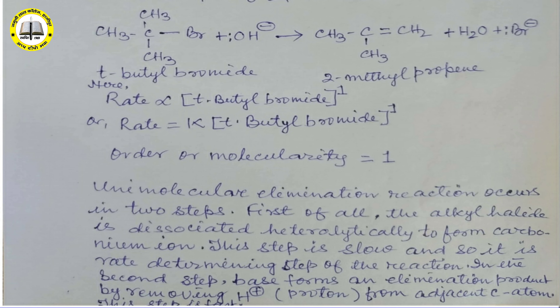Rate of this reaction is directly proportional to the concentration of the substrate molecule. Here substrate molecule is tertiary butyl bromide. So we can write: rate is directly proportional to the concentration of tertiary butyl bromide to the power 1.